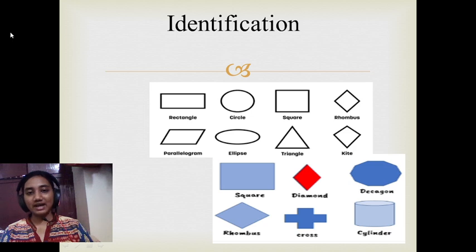So how do we identify perimeter and area? The one where only the outer part is involved, that is the perimeter, which is the first image. And the one where the inside part is colored, that is termed as area, which is the second image.